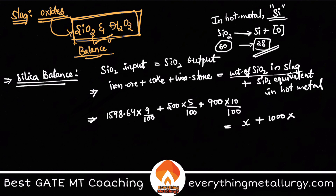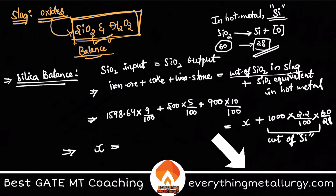Solving that equation gives you the SiO2 in slag. For Al2O3 it is quite simple because there is no aluminum present in dissolved form in the hot metal. So you just do a straightforward Al2O3 balance across the inputs (ore and coke both have Al2O3). The total slag weight is the sum of weights of SiO2 and Al2O3.